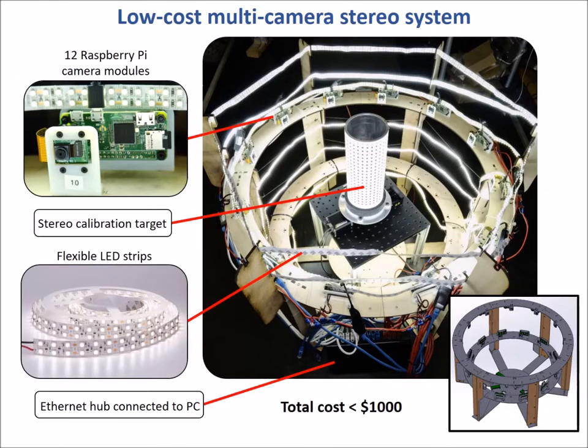The capabilities of Multi-DIC tested in this paper utilized a low-cost multi-camera stereo system featuring 12 Raspberry Pi camera modules connected to a PC. The illumination of the measured object was provided by flexible LED. The total cost of the system was under $1,000.